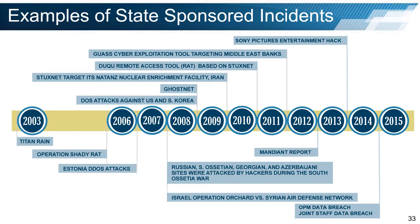Over the last 15 years, there have been numerous cases of suspected state-sponsored cyber incidents and malicious cyber activity. Some of the most notable examples are displayed on this timeline. Recent examples include the cyber attack on Sony and the OPM data breach. While the evidence for most of these incidents is not conclusive, the preponderance of evidence points to the involvement of state actors.